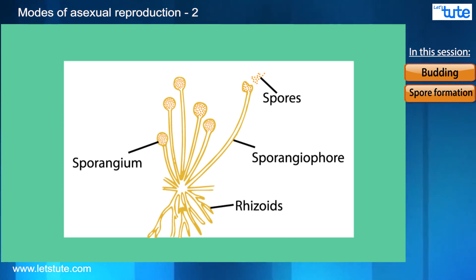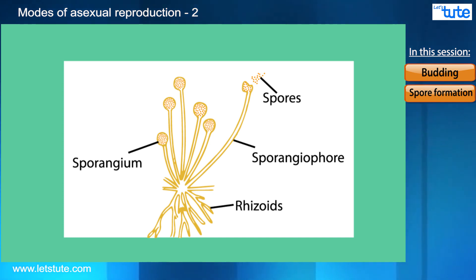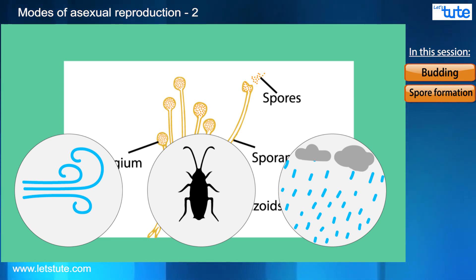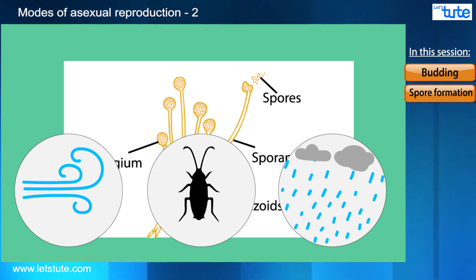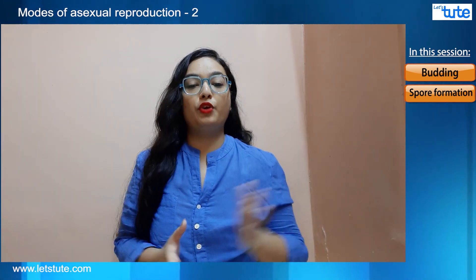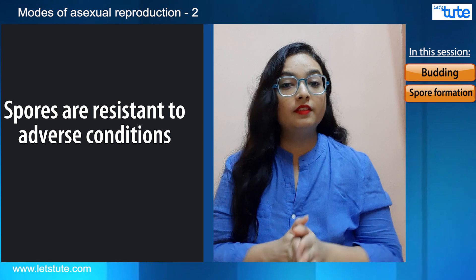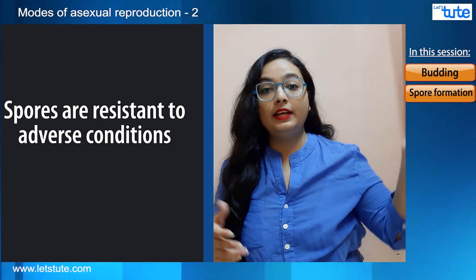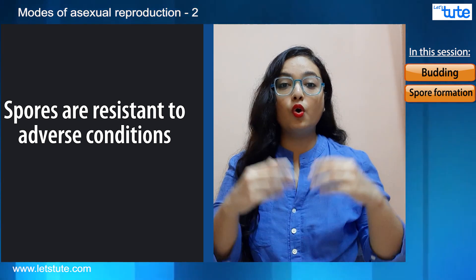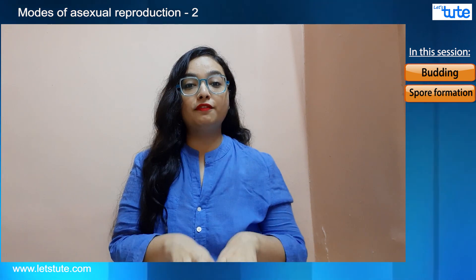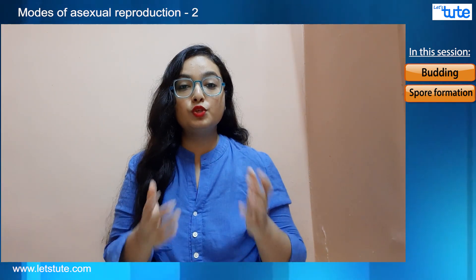These sporangia are dispersive in nature, meaning they can get scattered away through wind, insects, or rain. That is why spores land on our food and spoil it. When these spores are out of the sporangium, they are very resistant to many adverse conditions — they do not get affected by very high or low temperatures, and they are always present in the environment, ready to attack and sit on fruits, breads, and many other eatables to spoil them.